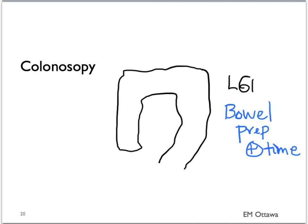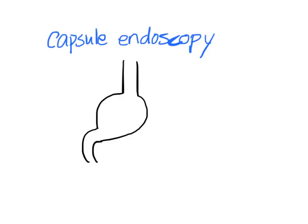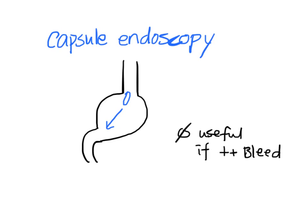For colonoscopy to start you need a bowel prep, which takes a lot of time and is usually not suitable for patients in the emergency department. Also in massive lower GI bleed it is very difficult to visualize the bowel. In a patient with a clean bowel prep you might be able to see signs of inflammatory colitis on the colonoscopy. There is also a newer technology known as capsule endoscopy, where the patient swallows a small capsule camera. As it goes through the GI tract it takes pictures, which are then analyzed by the gastroenterologist to see if there is any bleeding source. However, it's not very useful if the patient is having a significant bleed in the emergency department since it will be very difficult to visualize the photos.